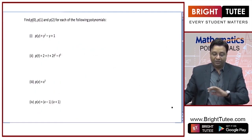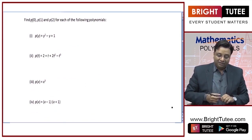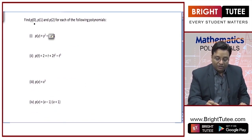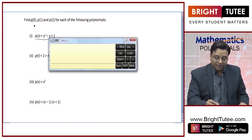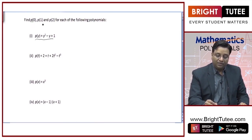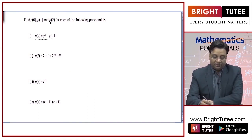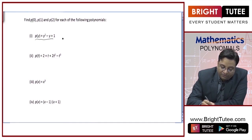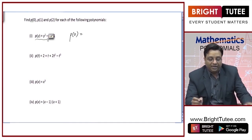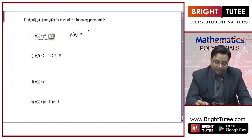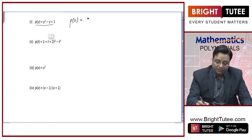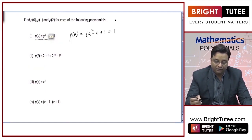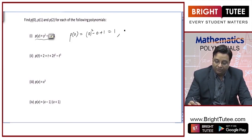Find p of 0, p of 1, p of 2 for each of these polynomials. This means we need to find the value of this polynomial at 0, 1, and 2. Let us solve the first part first. p of 0 means we need to replace y by 0 everywhere, so it will be 0 squared minus 0 plus 1, which is 1. p of 0 is 1.